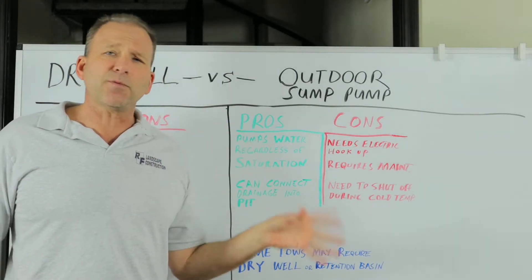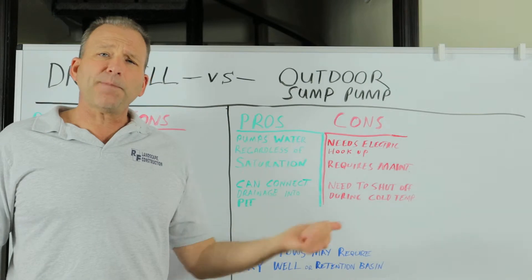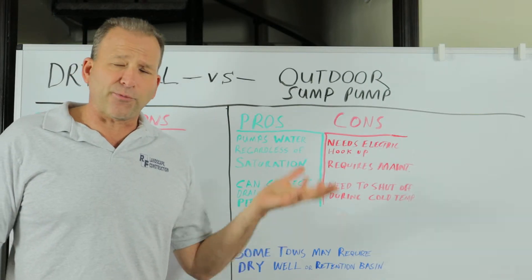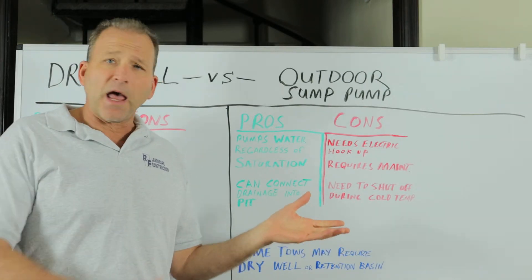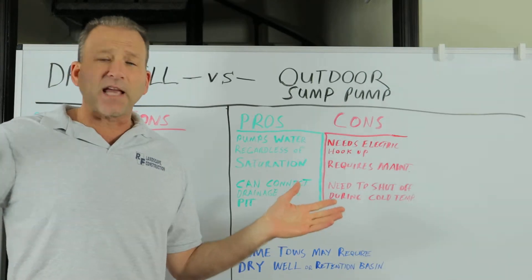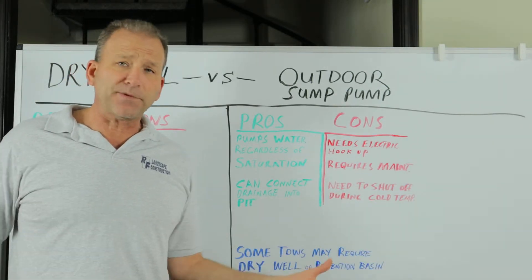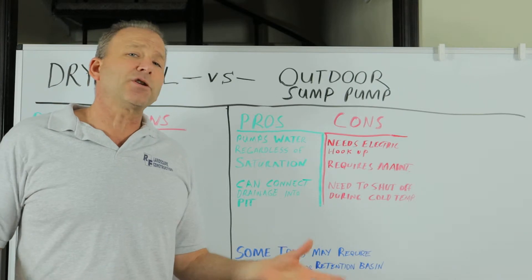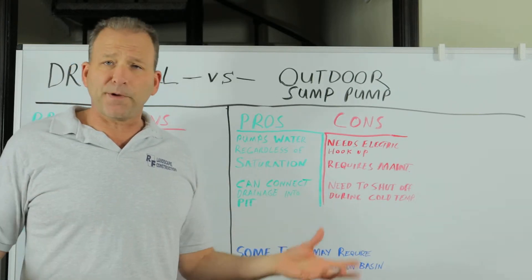It's going to pump water continuously, and typically your pumps will start out at 3,000 gallons per hour and go up to 5,000, 10,000. You can put as big of a pump, you can put two pumps in there, whatever the application calls for. It'll work beautifully.